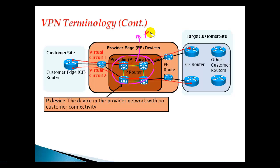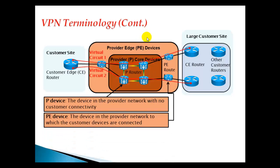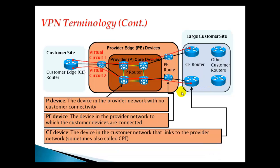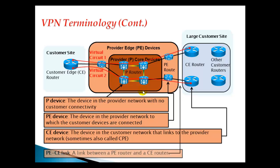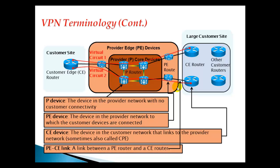We also have P devices — provider devices — which are the middle routers with no direct connection to customers. Then there are Provider Edge devices, called PE devices, which are the devices that connect to the customer — either to a single customer or multiple customers. And then you have Customer Edge devices, called CE devices, which connect to the provider edge. The link connecting between the PE router and the CE router is called the P-to-C link.